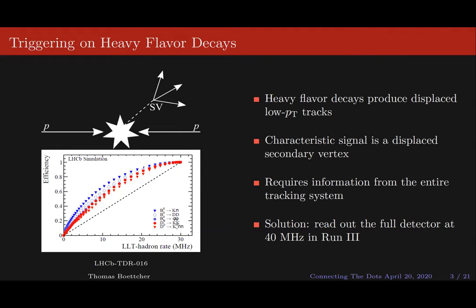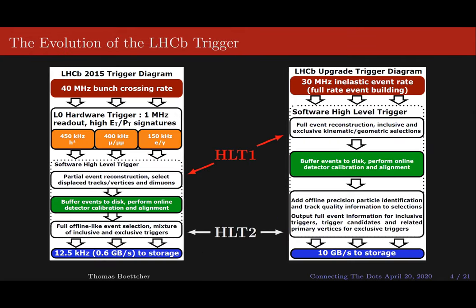Our solution is to read out the full detector at 40 megahertz and run a full software trigger. This means we have to redesign our trigger between run two and run three. In run two, the 40 megahertz bunch crossing rate goes to a hardware level trigger outputting one megahertz, which feeds a two-level high level trigger split into HLT1 — partial event reconstruction — and HLT2 — full offline-like reconstruction. In run three, the hardware level trigger is removed, so HLT1 will have to process the full collision rate. That HLT1 step is what I'm focusing on.